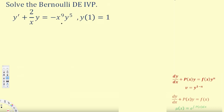In this Bernoulli's differential equation, what we do is we try to convert this one into a first order linear differential equation. To do that, we pick a v value that is equal to y power 1 minus n. The n value is basically the exponent on y here. So n is going to be equal to 5.